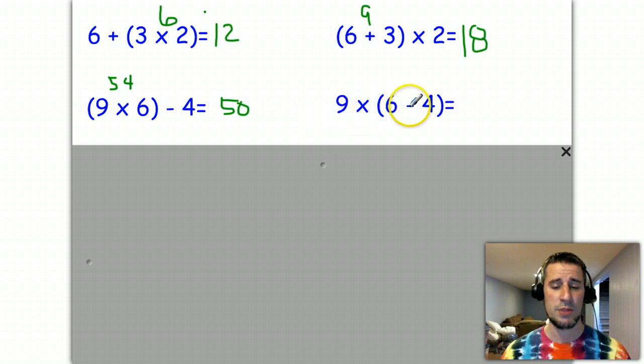Your next problem over here - same numbers, different parentheses. You've got 6 take away 4, which will give you 2. 9 times 2 is going to give you 18. Notice how you get those different answers all because of parentheses location.